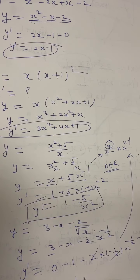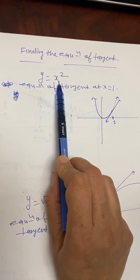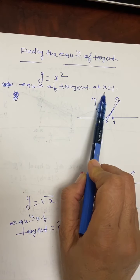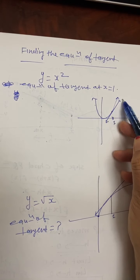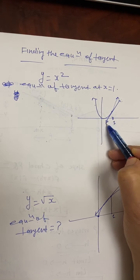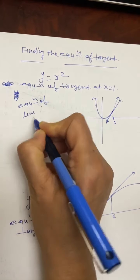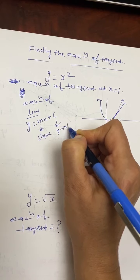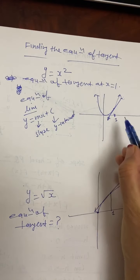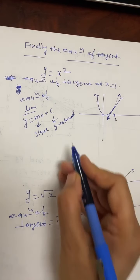Now I'm going to introduce finding the equation of a tangent — this is one step further. Starting with a simple example: y equals x squared, find the equation of the tangent at x equals 1. The graph of y equals x squared is a parabola opening upward. To find the equation of a line, you need two things: the slope m and the y-intercept c, using the form y equals mx plus c.